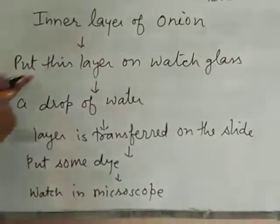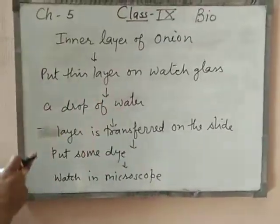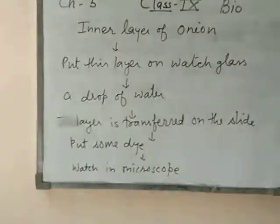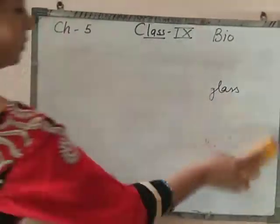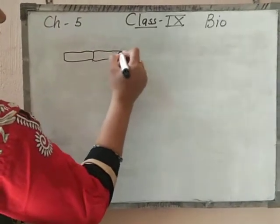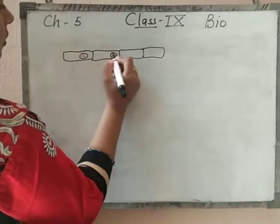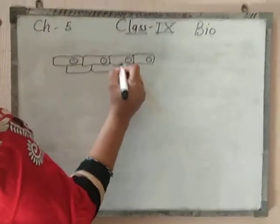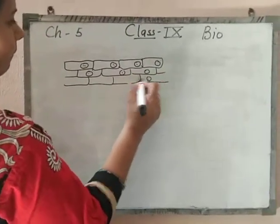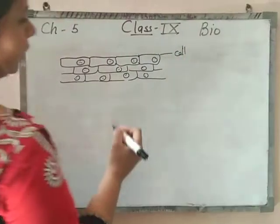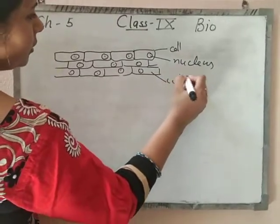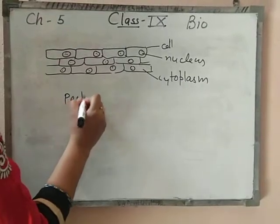Take the inner layer of onion, put this layer on the watch glass, take a drop of water, transfer the layer onto the slide, put some dye, and watch it in the microscope. You will see a structure in which you can observe a prominent nucleus. This is the cell, this is the nucleus, and this is the cytoplasm. It is the peel of onion.